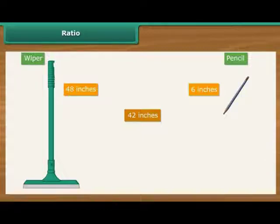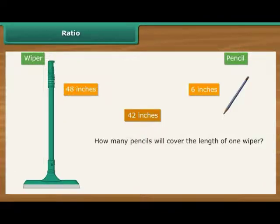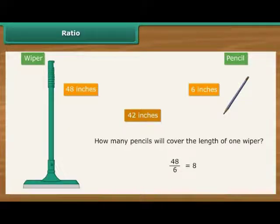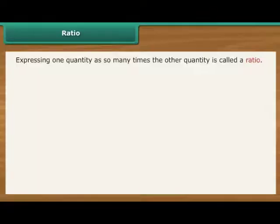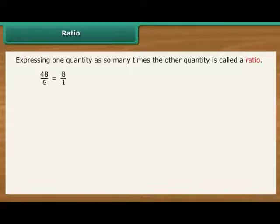How else do we express the variation? How many pencils will cover the length of one wiper? The answer is 48 divided by 6, that is 8. In other words, the wiper is 8 times longer than the pencil. Expressing one quantity as so many times the other quantity is called a ratio. 48 divided by 6 is 8 divided by 1, which can also be written as 8 is to 1. Colon is the symbol used to denote ratio.